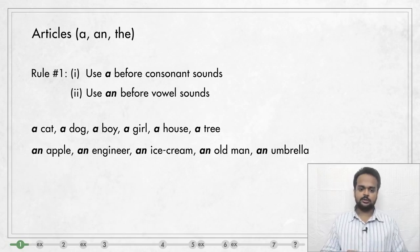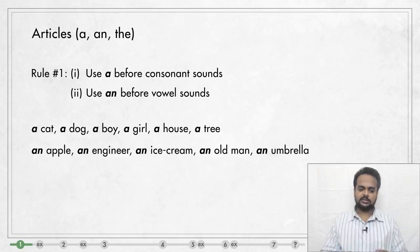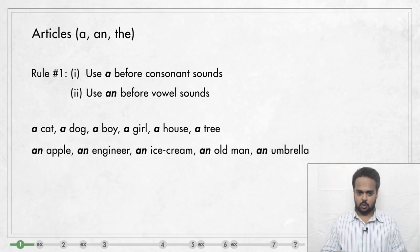In this next set of words, you see that they all start with a vowel sound. Apple starts with A, engineer starts with E, ice cream starts with I, old with O, and umbrella with U. So we say an apple, an engineer, an ice cream cone, an old woman, an umbrella, and so on. In speech, we don't say AN — we say an.